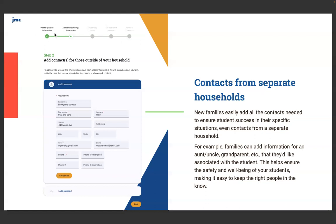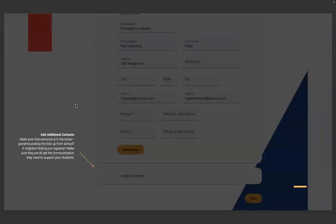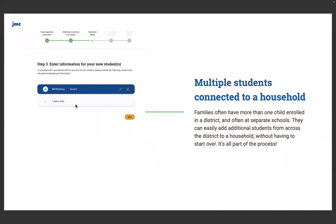You'll notice as we're navigating through, we've got step one, step two — we've got parent/guardian information, then we've got additional contacts information, making it clear what type of contact we're asking for. Is this an emergency contact? And allowing those families to understand how we use contacts in JMC and how your school uses contacts. We'll also provide the ability to add multiple contacts. If grandma picks the kids up from school, or if they've got a neighbor that's regularly helping out, they can communicate or add those contacts right to their list. Multiple students connected to a household: families often have more than one child enrolled in a district and often at separate schools. They can easily add additional students from across the district to one whole household without having to start over. If you've got a kid in the elementary and a kid in the high school, you can easily add both of those kids at one time.